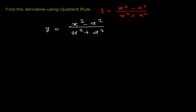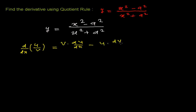Let me first write the quotient rule once again. If you have one function divided by another function, how do we find the derivative? The formula is: the derivative of u over v is equal to v times the derivative of u with respect to x, minus u times the derivative of v with respect to x, all divided by v squared.